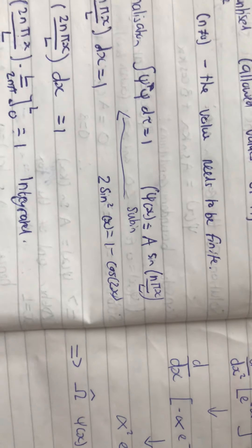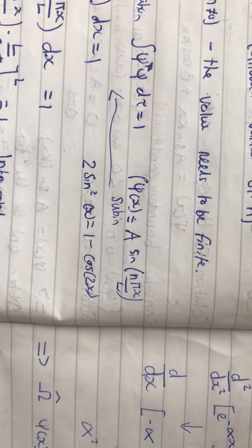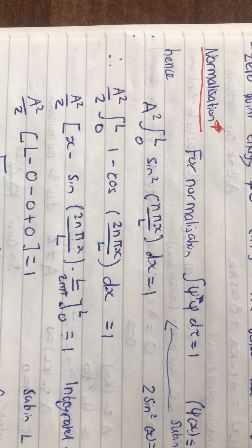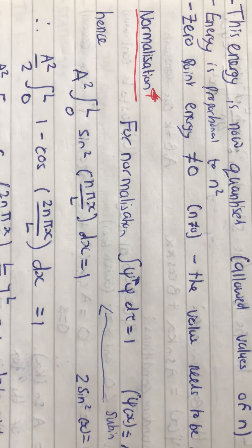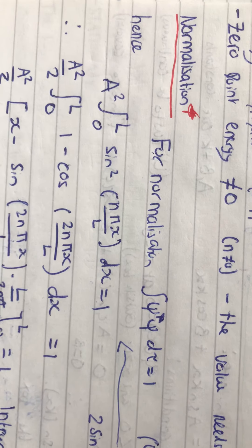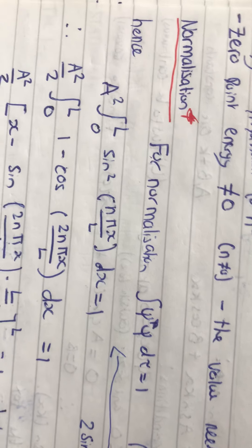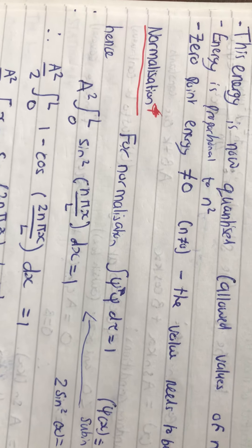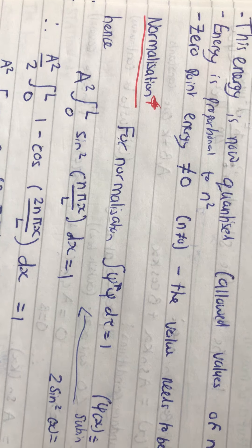So, if we have a look here, this is our wave function that we described earlier. And, if we sub that in to this equation, we can take a factor of a squared out and get sin squared nπx over L dx.